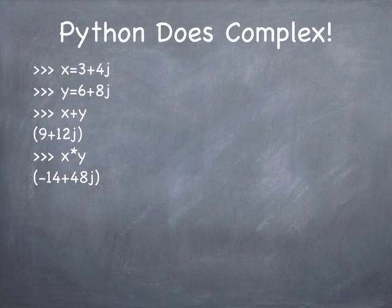Notice also: mathematicians have historically used i to mean the square root of negative 1, but in Python they chose to use j because there are engineers in the decision-making process. Engineers use j because i already means current. So j is the way you create a complex number in Python. What I sometimes do is define a variable called i which happens to equal j, and then use i. You can do it either way.